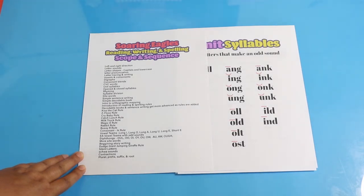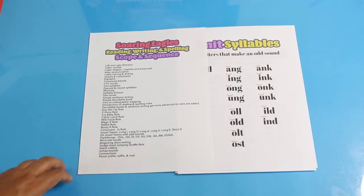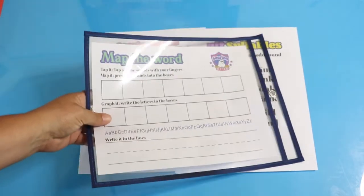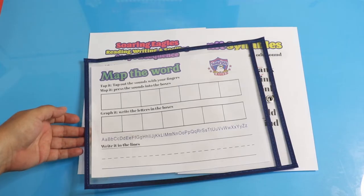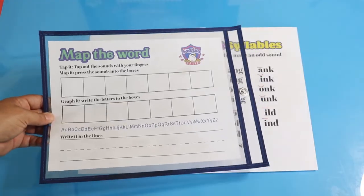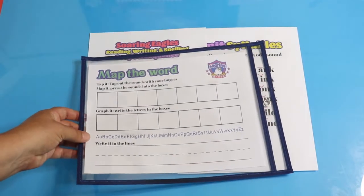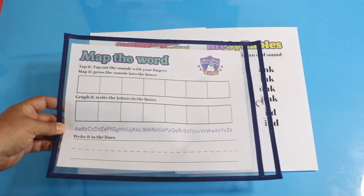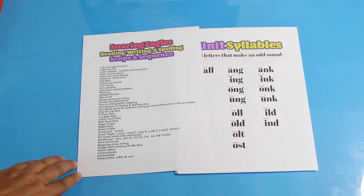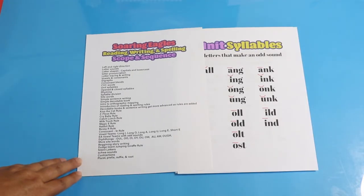Next is the intro to orthographic mapping. This is the worksheet — you'll have a link to that in the description as well. You can put it behind plastic and use dry erase on it. This is your word mapping sheet, and it helps with spelling and memorization through repetition.